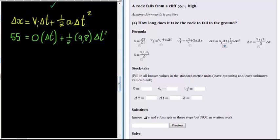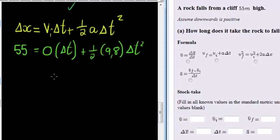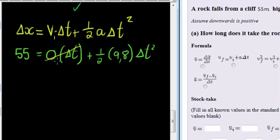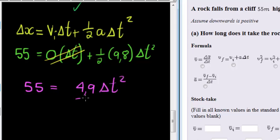All we need to do now is to solve for delta t. First of all, we notice that this will just completely vanish, and therefore all we have left is 55 equals one-half times 9.8, that's 4.9, times delta t squared. So all I need to do is divide both sides by 4.9. That's my first step.